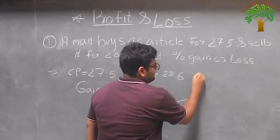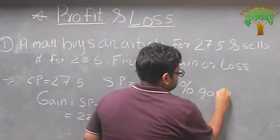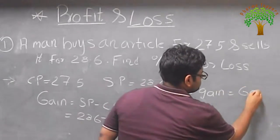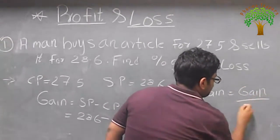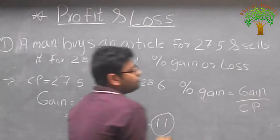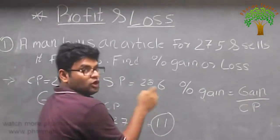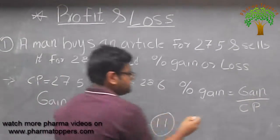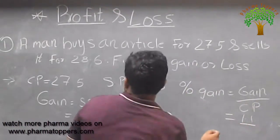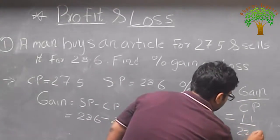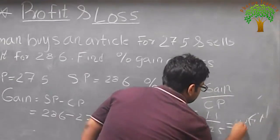So now we have to calculate the person gain or person loss. As I have already explained, person gain is equal to the gain upon the cost price. Again you have to see that it is on the cost price and not on the selling price. So it is 1.1p upon 27.5p would give you the answer.